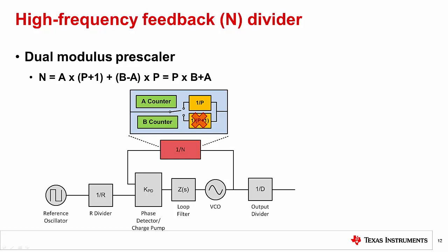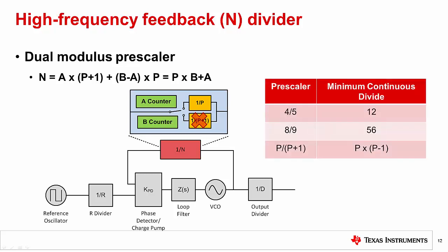If the N divider is larger than the known value, which is the minimum continuous divide ratio, then this requirement of B bigger than or equal to A is always met. This can be calculated as P times P-minus-1 for the standard N divider, but other factors such as fractional division circuitry can increase this value.